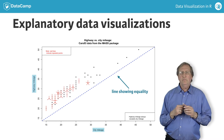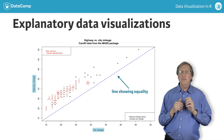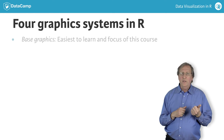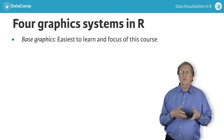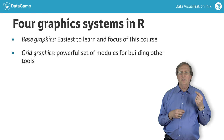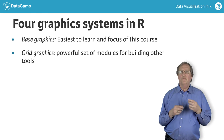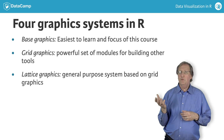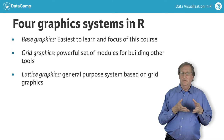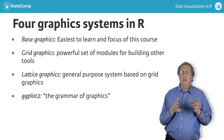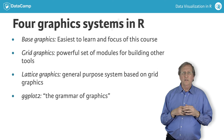To visualize data, R supports four graphics systems. Base graphics is the easiest to learn and is the focus of this course. Grid graphics provides a powerful set of modules for building other tools. Lattice graphics is a general purpose graphics system based on grid graphics. And ggplot2 implements the grammar of graphics in R and is also based on grid graphics.